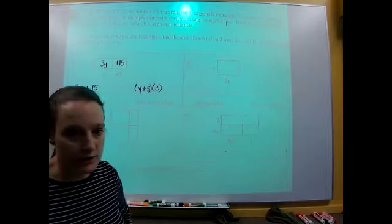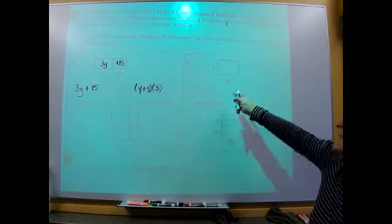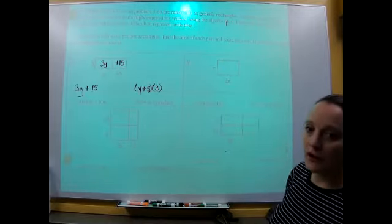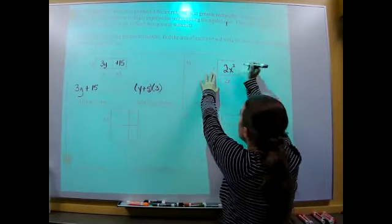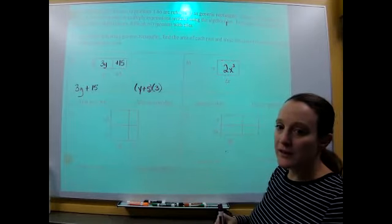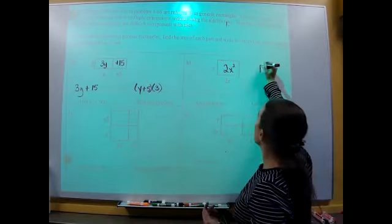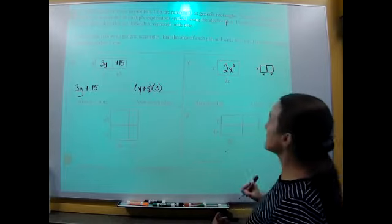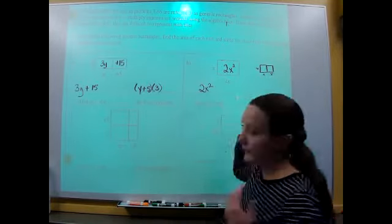My area as a product is my base Y plus five times my height of three. Notice I didn't actually have to get out three Y tiles and 15 unit tiles — my generic rectangle did that for me. Let's try B. B says I have a base of 2X and I have a height of X. So what's in the middle? 2X times X gives me 2X squared.